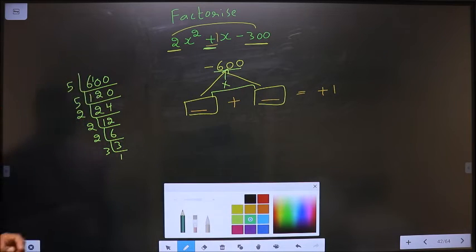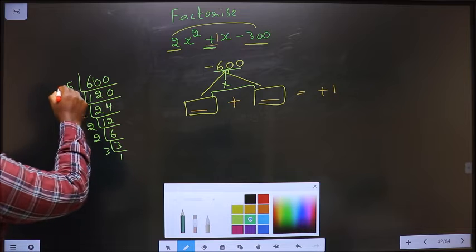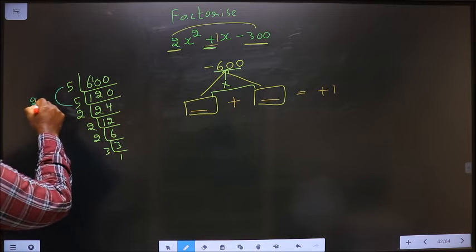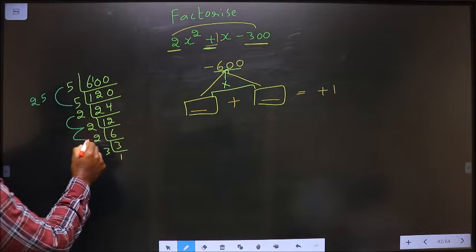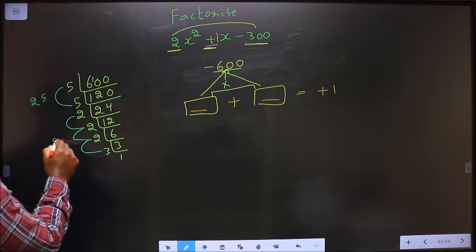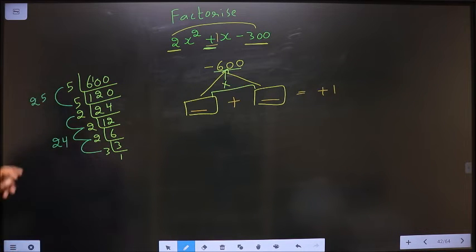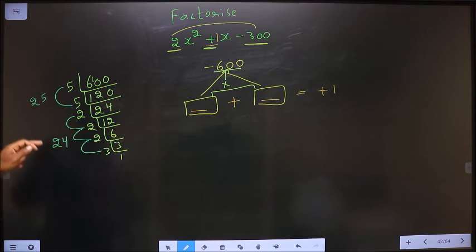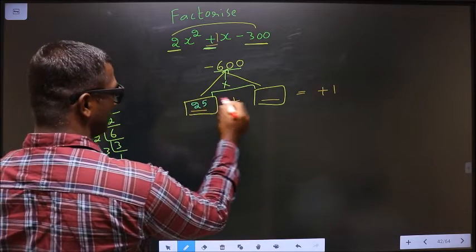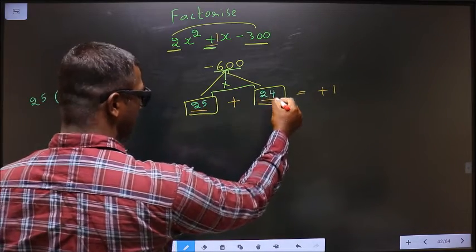Now, the two numbers will be 5 × 5 = 25, and 2 × 2 × 2 × 3 = 24. See, 25 × 24 = 600, and 25 - 24 = 1. So the two numbers are 25 and 24.